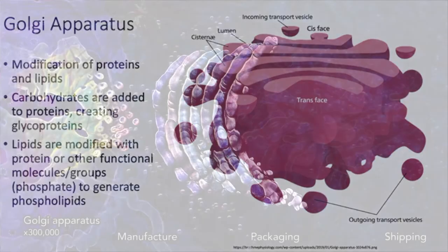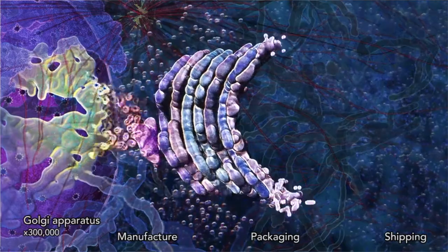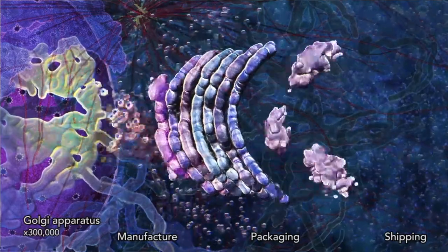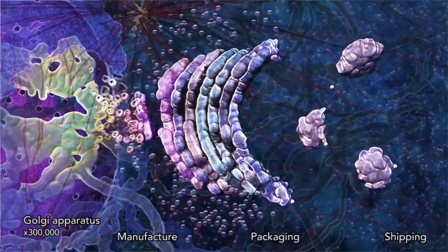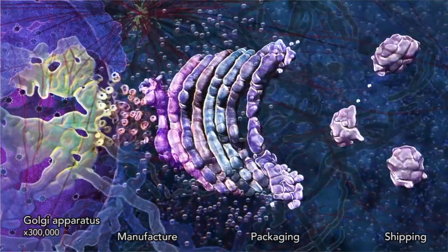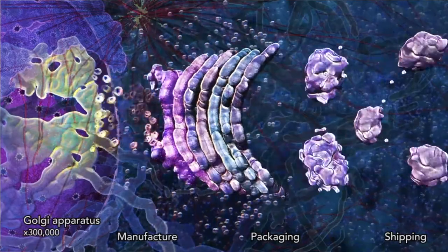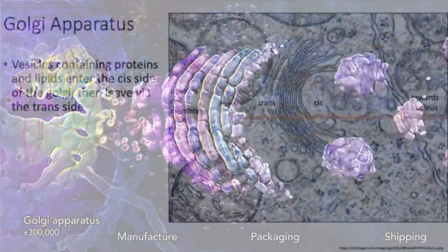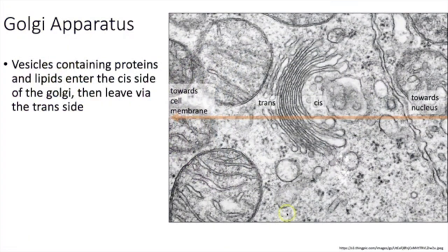Mitochondria are also responsible for many other things, including apoptosis. Fun fact: mitochondria have their own DNA — called mitochondrial DNA — and their own ribosomes. Now we're going to move from eukaryotes into prokaryotes. We're focusing on bacteria. They're simpler than eukaryotic cells for the most part, and they do not have membrane-bound organelles.